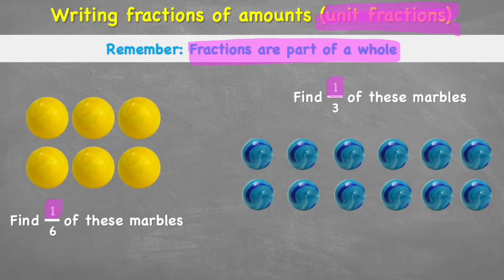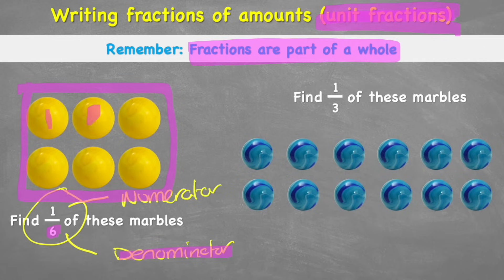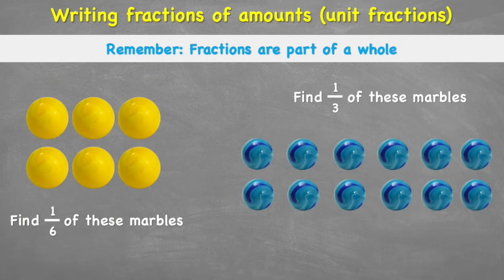When we're looking at a fraction, for example this 1 sixth over here, we have two numbers. The number on the top is called the numerator and the number on the bottom, the denominator. The denominator tells me how many I've split my whole into. So I have my whole pack of marbles here and I've split them into 6. The numerator is how many we're trying to focus on — in this case, 1. So let's look at what our question is asking us in this first example.